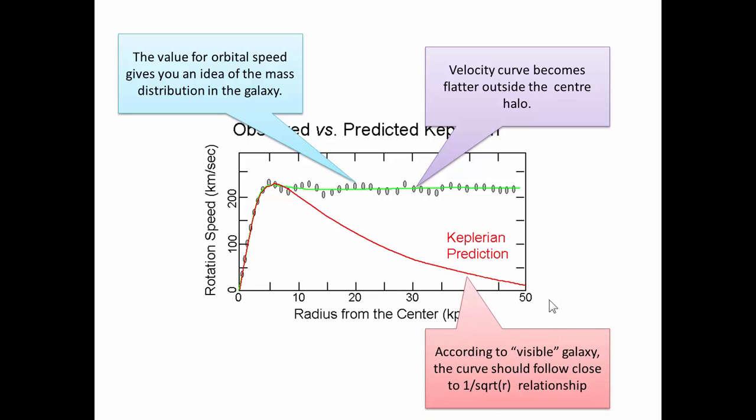And the last thing is, according to the visible galaxy, the light that we can see, in other words the matter that we can see, the curve should follow close to a 1 over the square root of r relationship. But it doesn't. It has this very flat feature here. But there's lots of matter that we're not able to see.